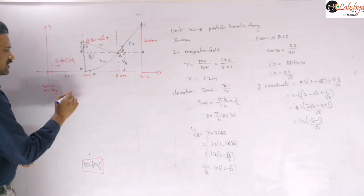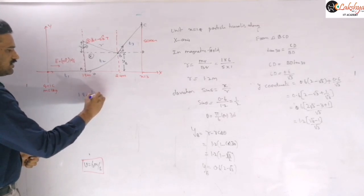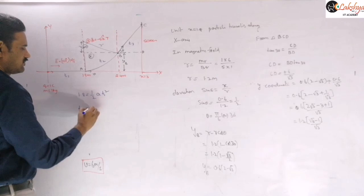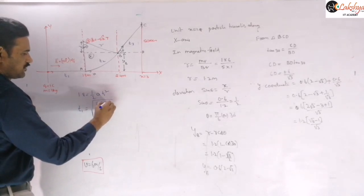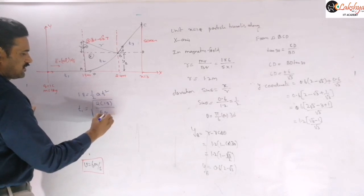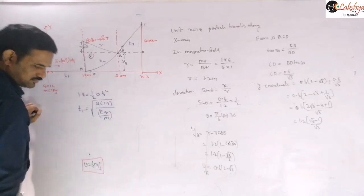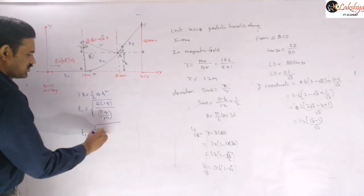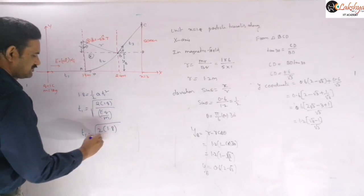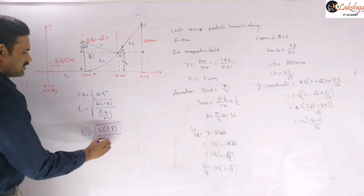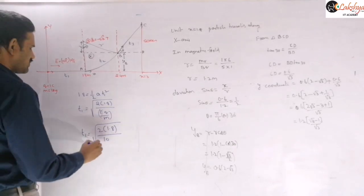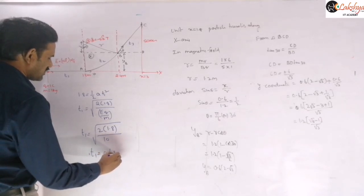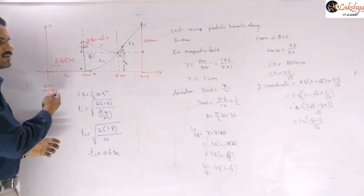For t₁, using s = ½at²: 1.8 = ½ × a × t₁². The acceleration a = qE/m = 10 m/s². So t₁ = √(2 × 1.8 / 10) = 0.6 seconds.